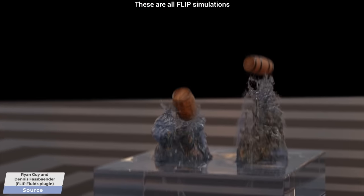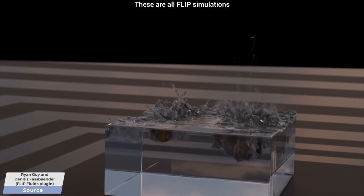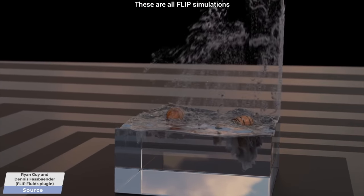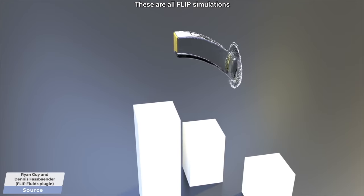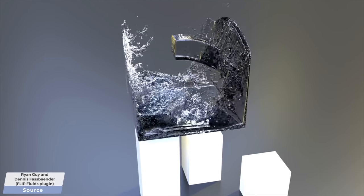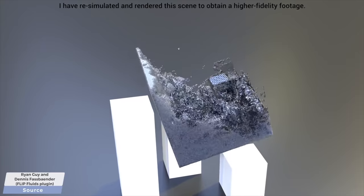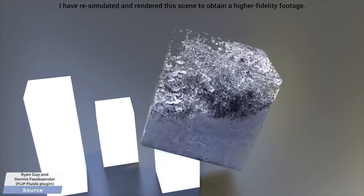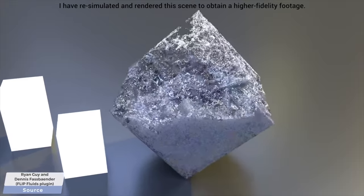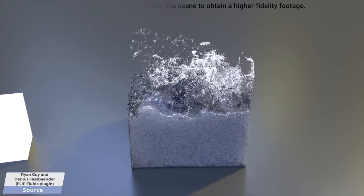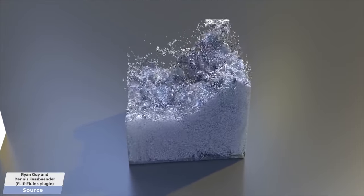So why do we need two, or perhaps even more methods, why not just one? Well, first, if we wish to simulate turbulence and high-frequency splashes near moving objects, FLIP is the answer. It is great at exactly that. However, it is not great at simulating big volumes of water.